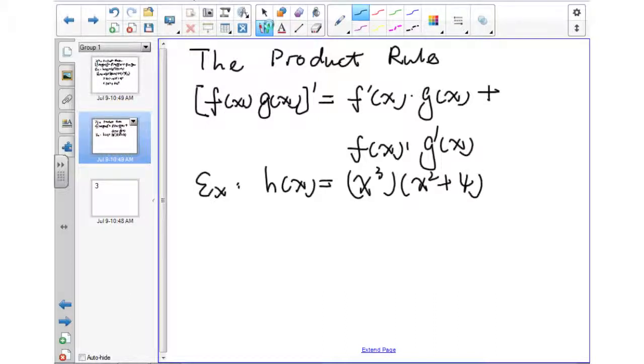So h'(x) is equal to, now we take the x cubed derivative first. So it's 3x squared times the original piece, x squared plus 4.